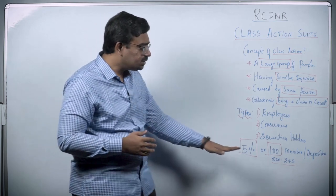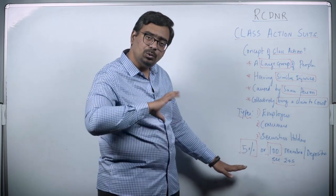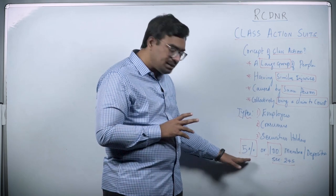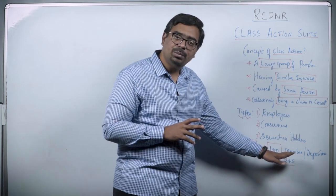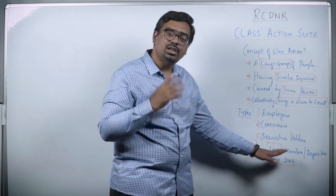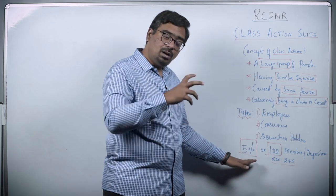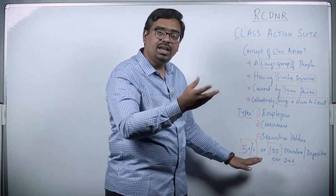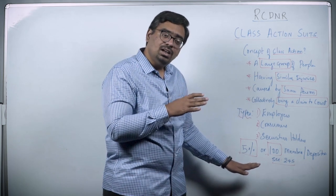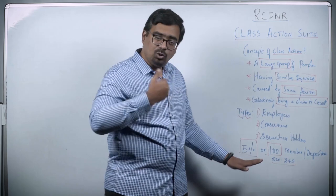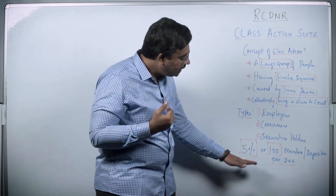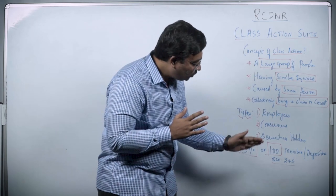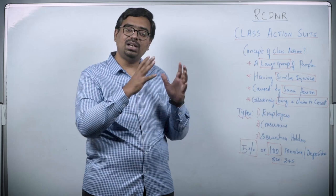Under Section 245, there are two criteria — whether it is a group of shareholders or depositors. Either 5% of the number of shareholders or depositors, or 100 members (whichever is applicable), can file a petition before the National Company Law Tribunal. Alternatively, 5% of members representing 5% of the capital, or 5% of total deposits, can file a combined petition. Once filed, notice can be given so that all other interested parties can join collectively and seek the remedy. This is the whole objective of class action under Sections 245 and 246 of the Companies Act 2013.